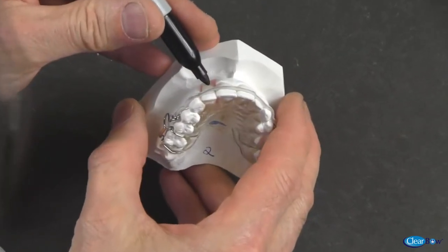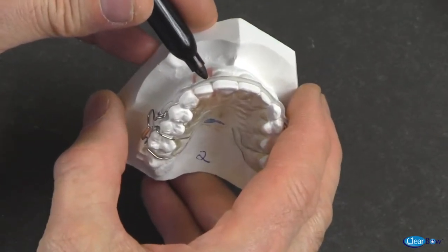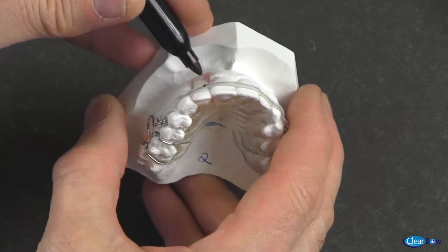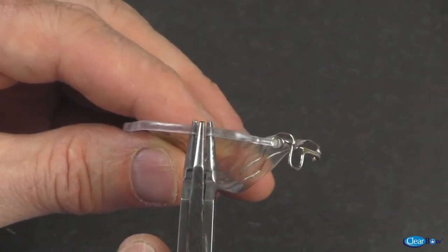The clear bow will now be bent using three-pronged pliers to contact the mesial labial corner of the rotated lateral. A black dot is marked on the clear bow to make the bend more visible.